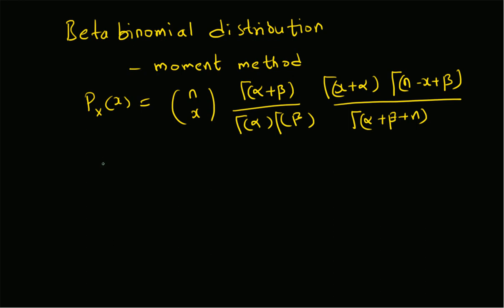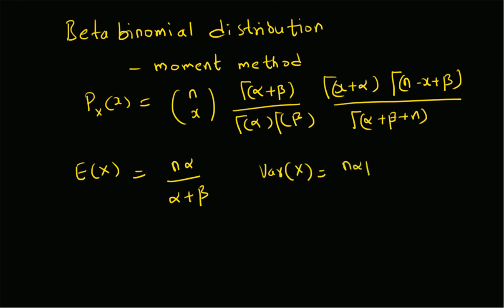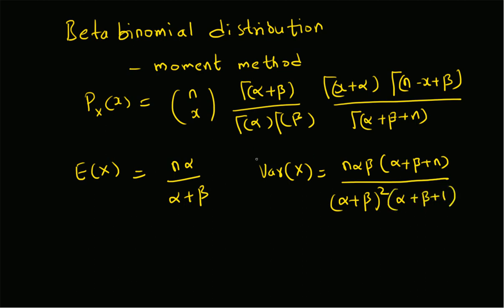Given this distribution and given N data points — that is N values of the random variable X — we want to find the unknown parameters α and β. From theory or previous videos, we know that the mean of X is n·α/(α+β), and the variance of X is n·αβ·(α+β+n) divided by (α+β)² · (α+β+1).